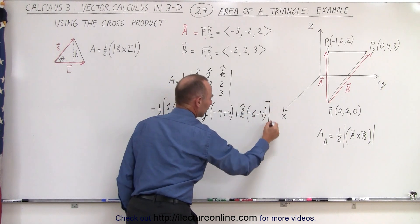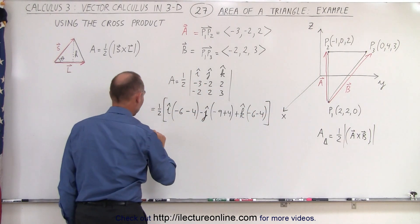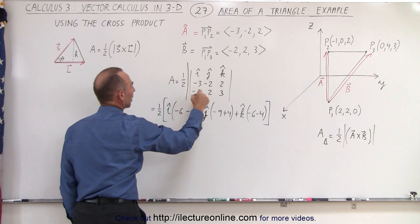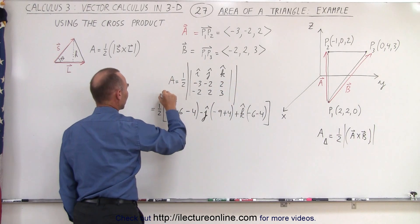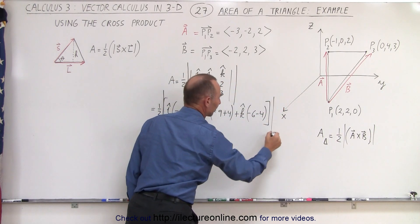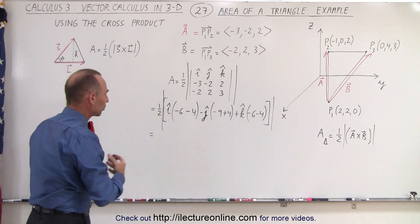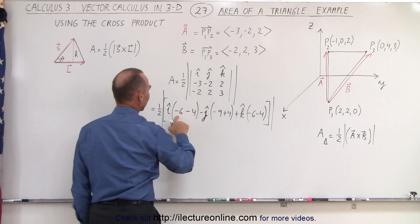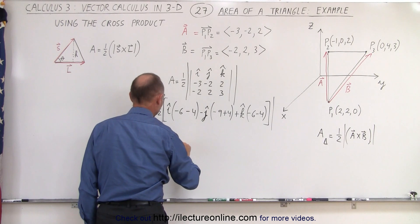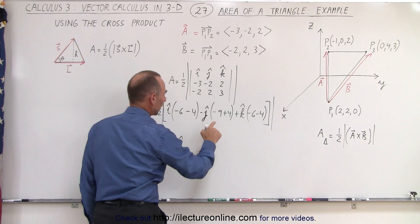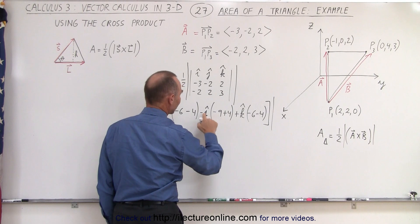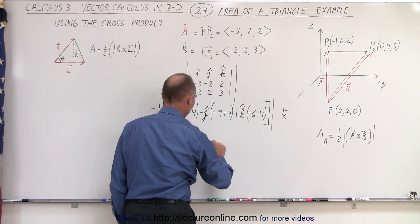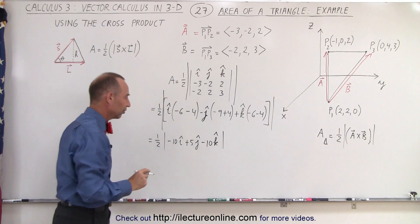Now let's simplify. Remember the area will be the magnitude of this, so I need to put absolute value signs around it. This equals one-half times: negative six minus four gives negative ten in the I direction. We have negative nine plus four, that's minus five, but with the negative sign on J it becomes plus five in the J direction. And that would be negative ten in the K direction.